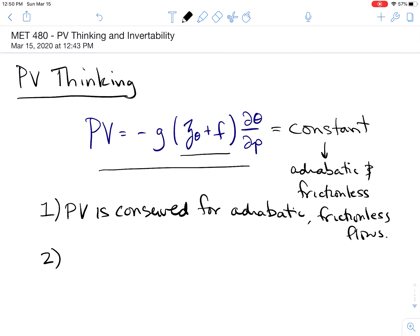And two, PV is invertible. What does it mean to be invertible? We will get to this in just a little bit. But in essence, it means we can extract information from PV that may not otherwise seem that it's there right on the surface.